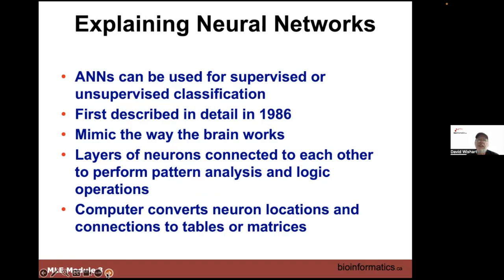Neural nets were first described by Jeffrey Hinton and others in 1986 — he's the godfather of machine learning. It mimics the way brains work: layers of neurons connected to each other to perform pattern analysis and logic operations — Boolean logic, things like AND, OR, NOR, and XOR. In the computer world, you're not actually drawing neurons or wiring connections; you're using tables that represent the connections between nodes. We call these matrices in math and physics, converting the network into arrays or tables or matrices.